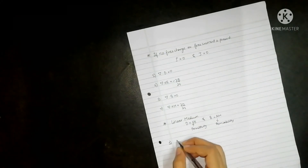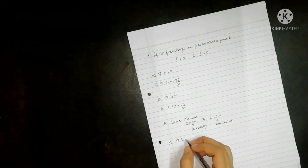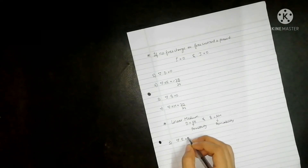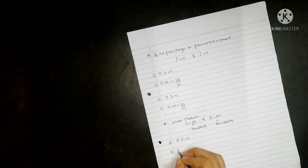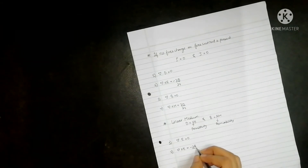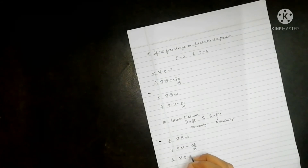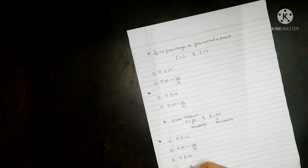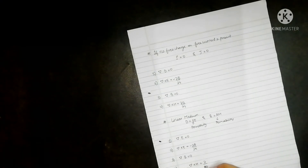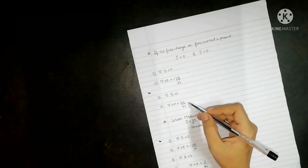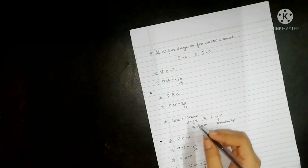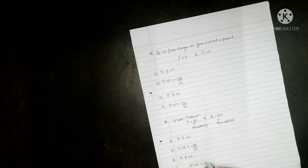Maxwell's equations become: del dot E is equal to zero. The second equation is: del cross E is equal to minus dou B by dou t. The third equation is: del dot B is equal to zero. The fourth equation is: del cross H is equal to dou D by dou t, but in place of D we can write epsilon E.